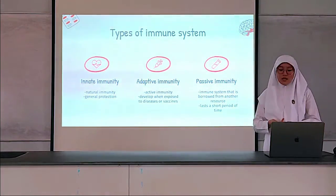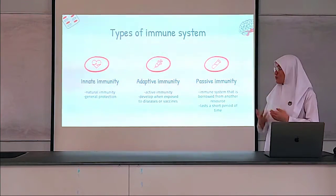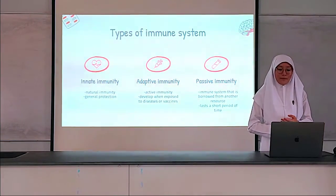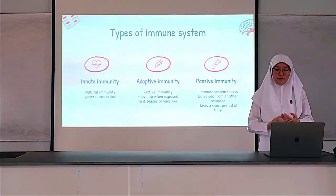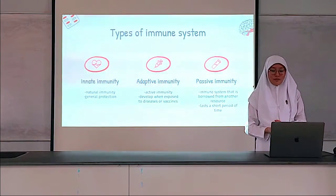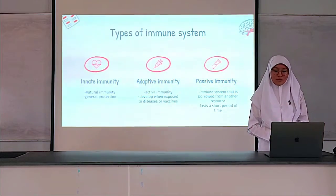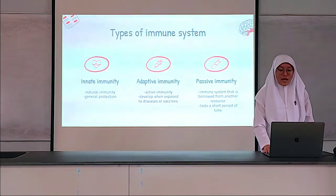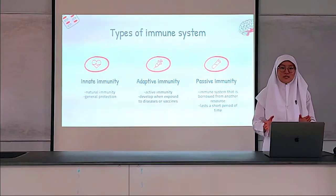Second, adaptive immunity, which develops throughout our lives when we are exposed to diseases or vaccines. Third, passive immunity. It is a temporary immune system derived from a mother's resources. For instance, antibodies in a mother's breast milk give a baby temporary immunity to protect against diseases the mother has been previously exposed to. Note that passive immunity is temporary and does not last long.